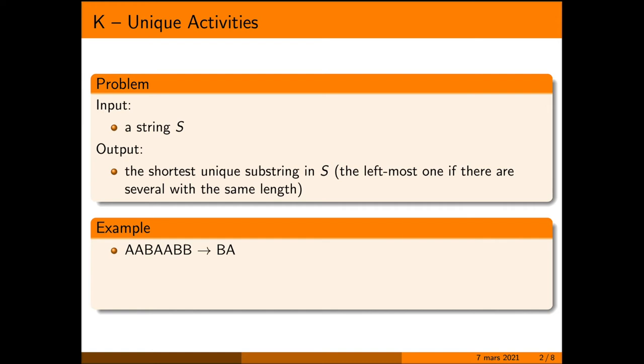For example, if you are given a string AABAABB, you go through all the single letters A, B - they are both repeated. So you look at the substrings of length 2. AA is repeated, AB is repeated, BA occurs only once. The answer is BA. BB occurs only once too but it's after BA.